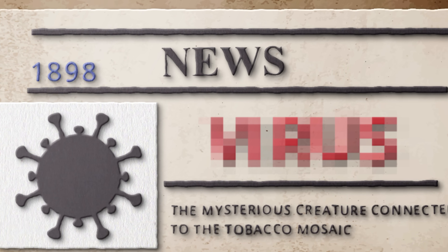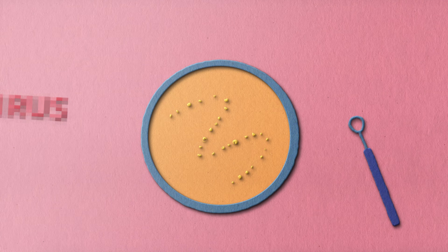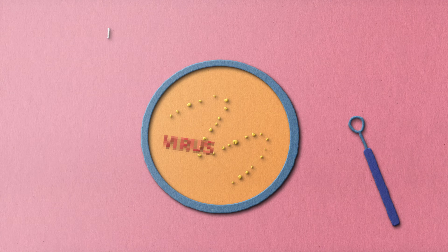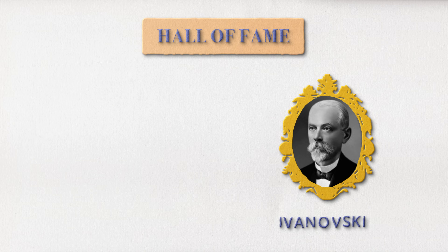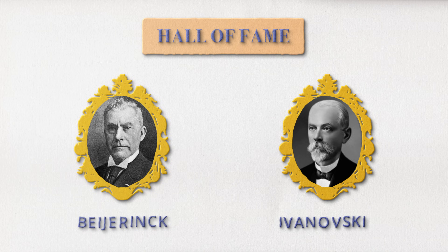Back to Beijerinck — he showed that the incitant was able to migrate in agar gel, therefore being an infectious, soluble agent. Ivanovski and Beijerinck brought unequal but decisive and complementary contributions to the discovery of viruses. Today we know this mysterious pathogen was indeed a virus.